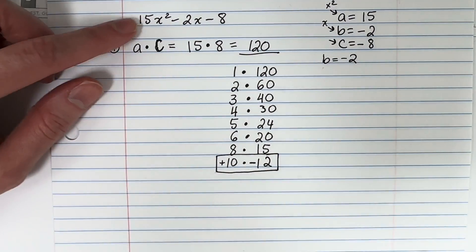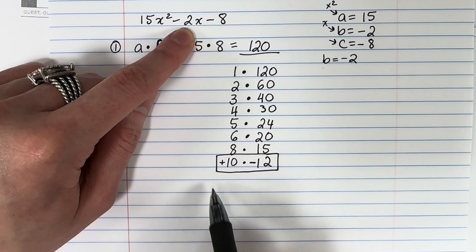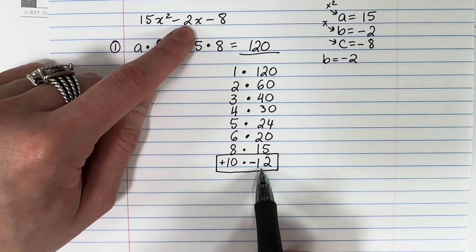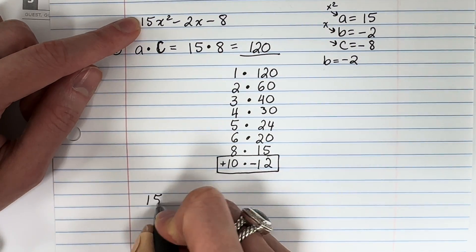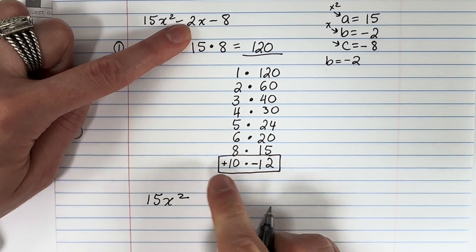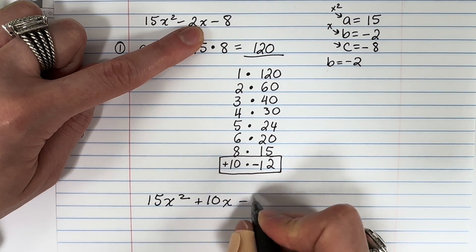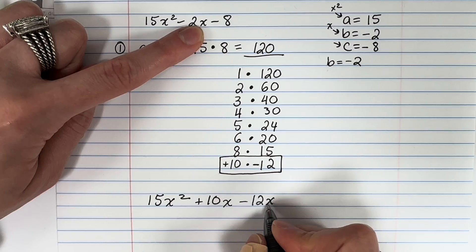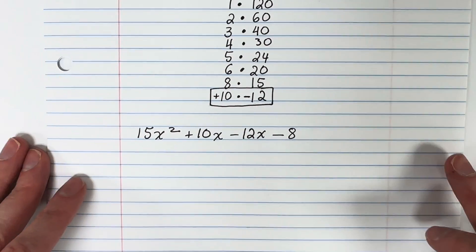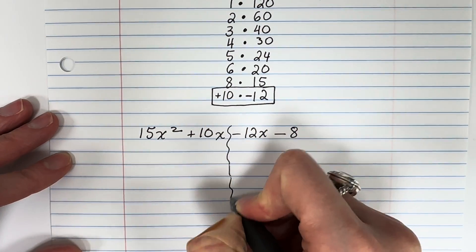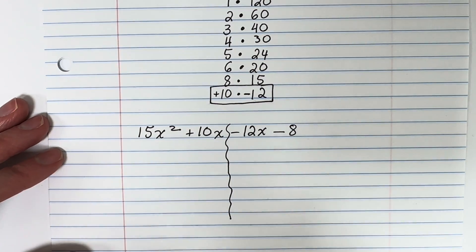Now I copy the trinomial but replace negative 2x with positive 10x and negative 12x, because 10 minus 12 is negative 2 — it's the same thing. So I write: 15x squared plus 10x minus 12x minus 8. Then I separate them into pairs: the first two together and the second two together, and factor each pair one by one.